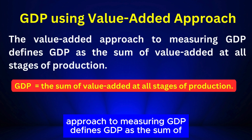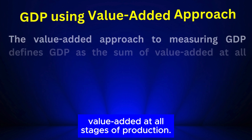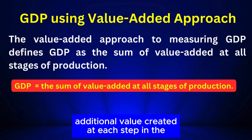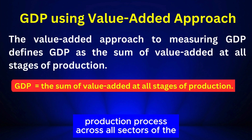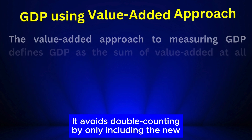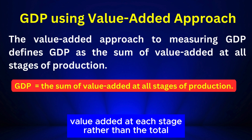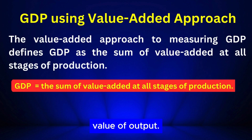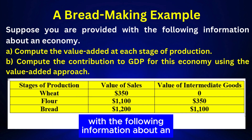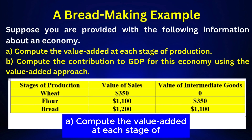The value added approach to measuring GDP defines GDP as the sum of value added at all stages of production. This approach calculates GDP by summing up the additional value created at each step across all sectors of the economy. It avoids double counting by only including the new value added at each stage rather than the total value of output. A bread-making example follows.